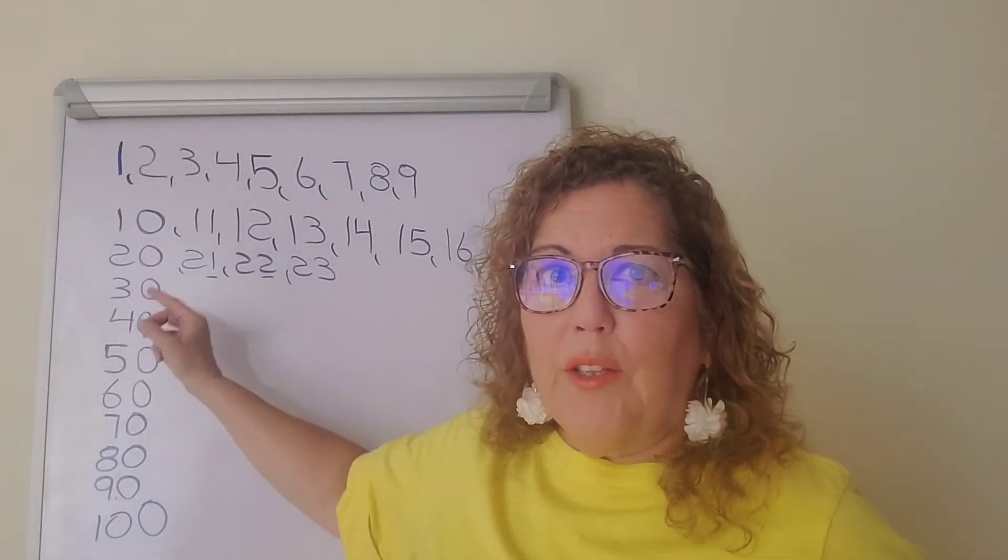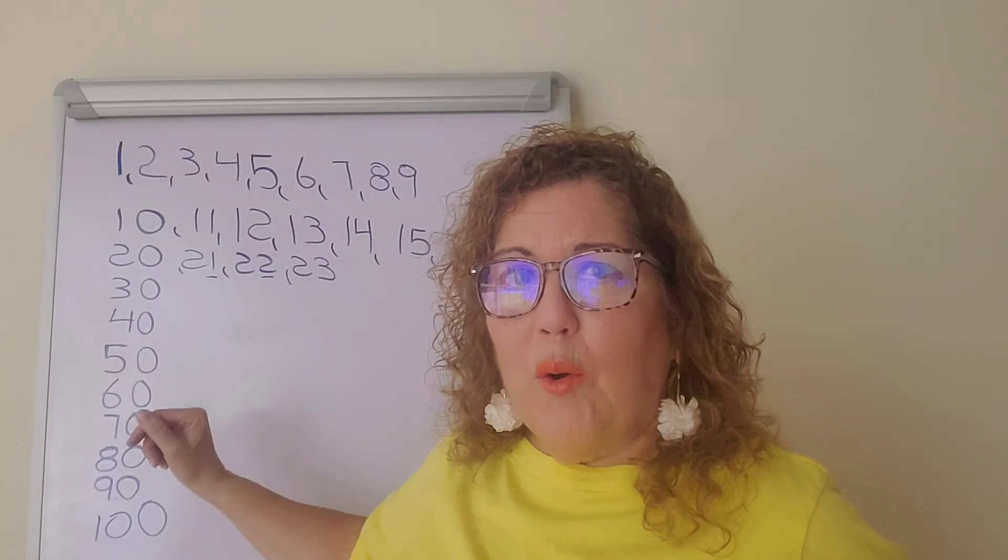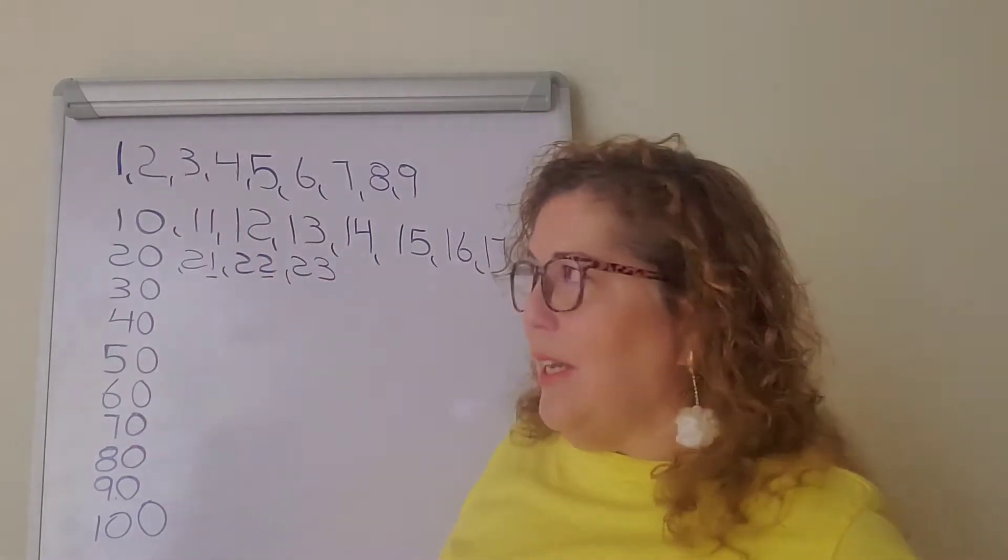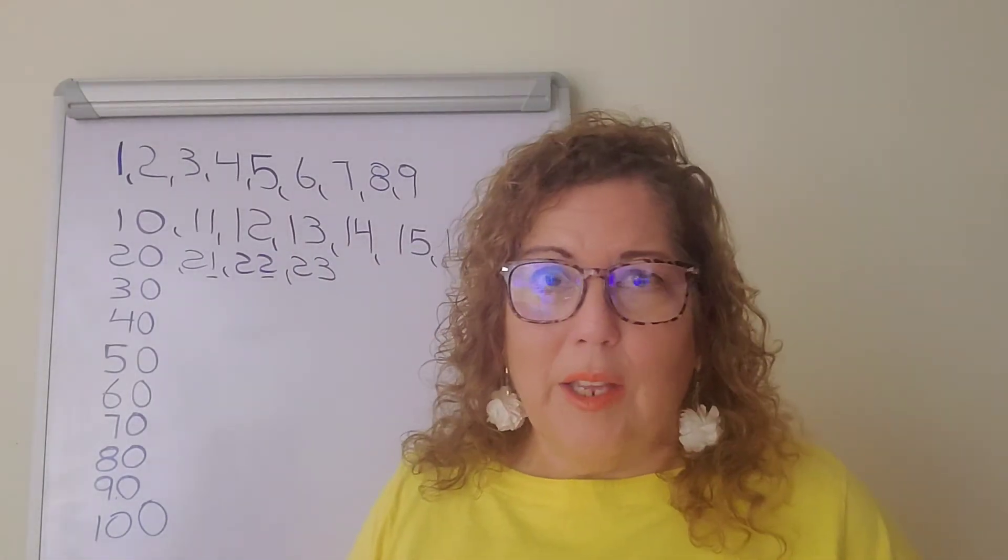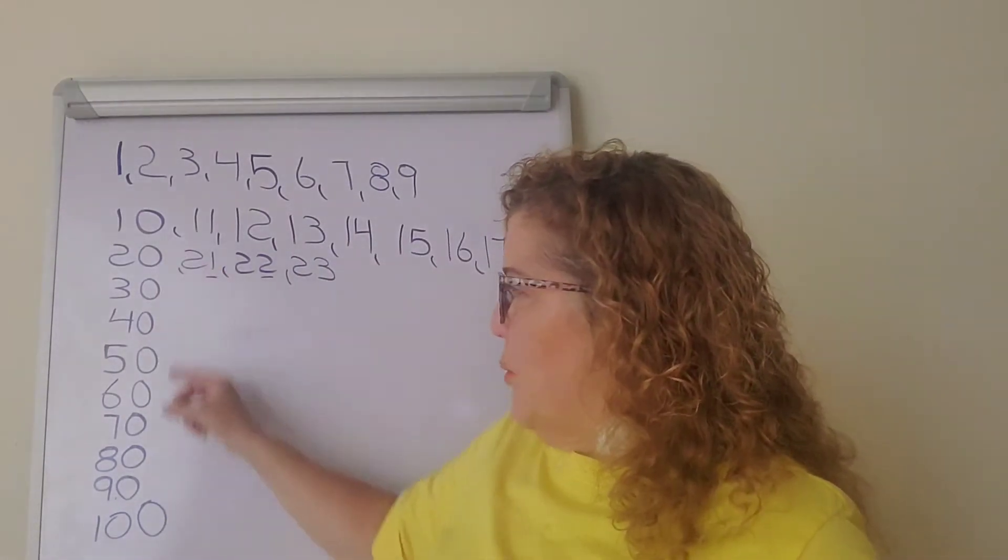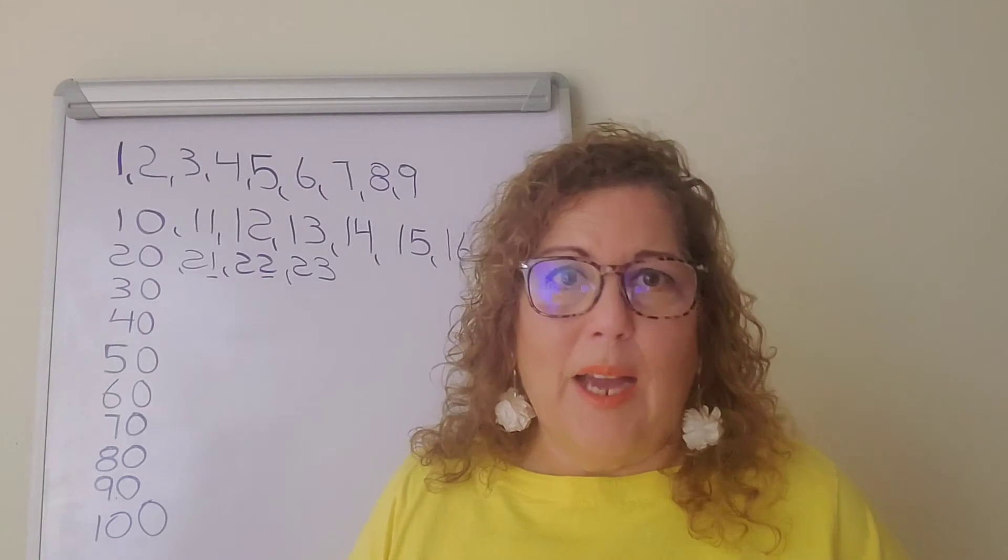From 20 to 30, from 30 to 40. You see the pattern here? These numbers here are the same numbers that we learned originally. All we did was put a zero to the right of them and we made those numbers.